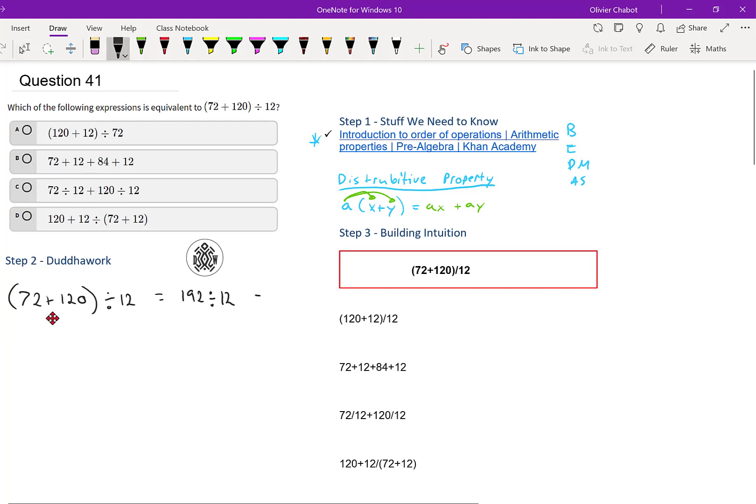So we get that this is 16. So we could do it this way, and then compare all the other answers to 16, calculate which one gives the 16. But I'll do that in step three, the building intuition.